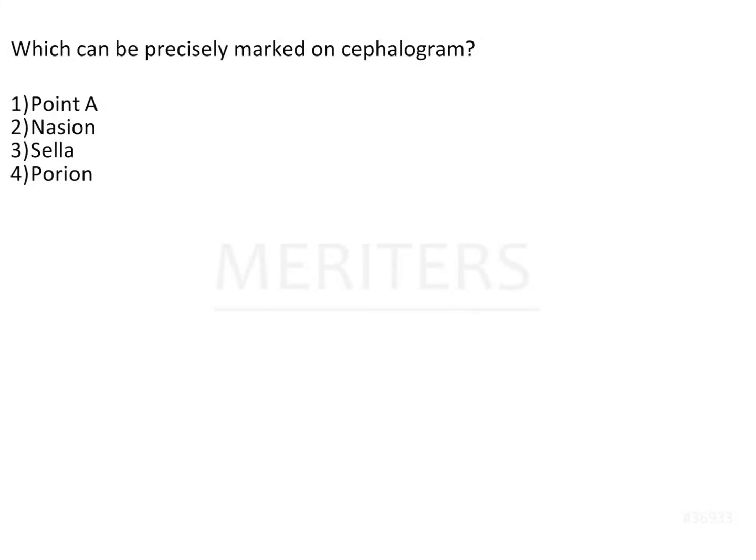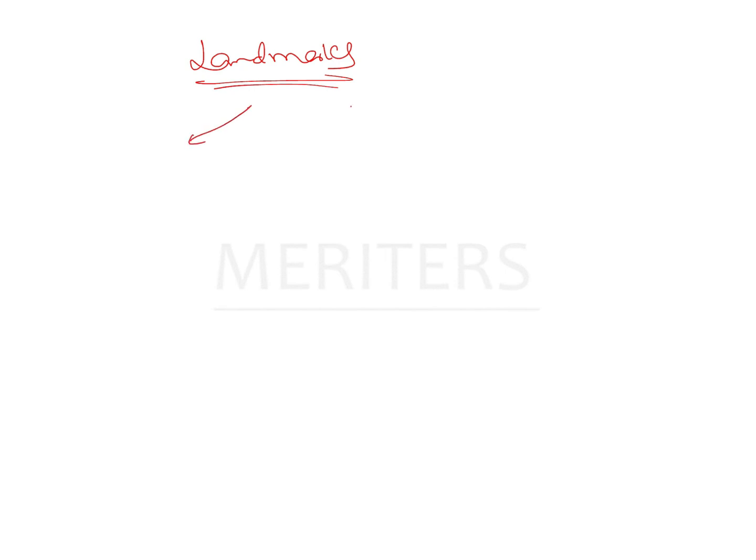Which of the following points can be precisely marked on a cephalogram? A cephalogram is a radiograph used to carry out certain analyses, and to carry these analyses out we utilize certain landmarks. There are certain landmarks marked on the lateral cephalogram used for quantitative measurements and analysis. These measurements and analyses help us in diagnosis as well as treatment planning. These landmarks can be of various types.